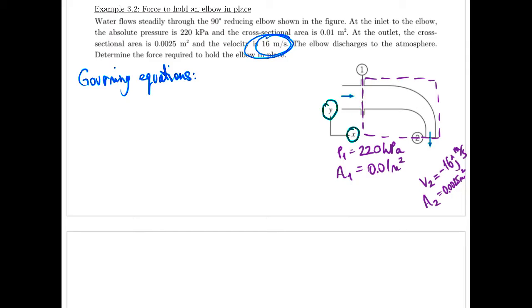Instead we're given a velocity of 16 meters per second, which again we have to assume that's an average velocity. It's only rational that they would give us that single value because it's an average velocity at the outlet there. So we write out our mass and our momentum balances as follows then.